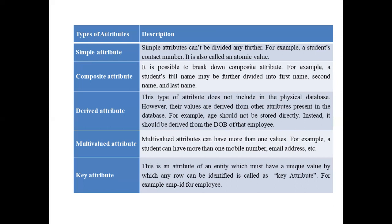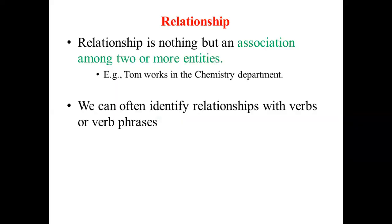Next is multi-valued attributes. When an entity has many values for a particular attribute, it is called a multi-valued attribute. For example, an employee or student may have different mail IDs and contact numbers. The last and very important attribute type is the key attribute. If an entity has its own special unique characteristic, that is called a key attribute. For example, a student is uniquely identified by their roll number — so roll number is the key attribute of a student. Similarly, employee ID and faculty ID give special identification for each individual, and that is called a key attribute.